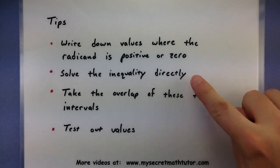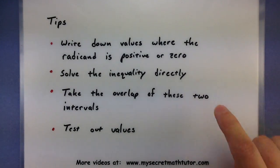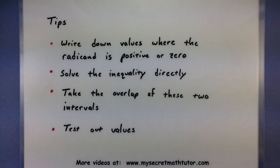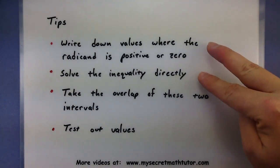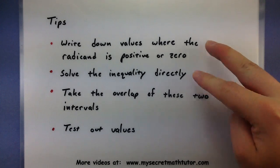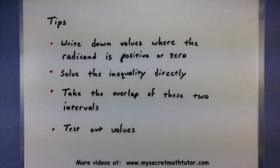After that, we'll go ahead and solve the inequality directly. This means we'll try and get the square root all by itself, square both sides, and really work on getting the x all alone. After doing these first two steps, we'll actually get an interval for each of them. And so our actual solution will come from the overlap of both those intervals.